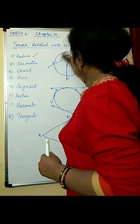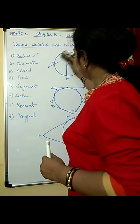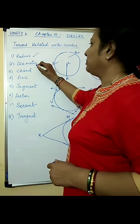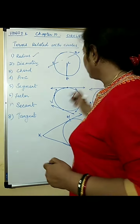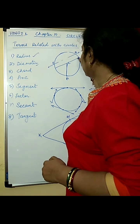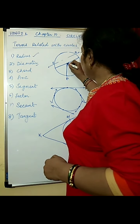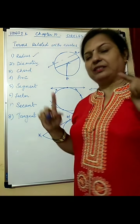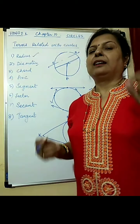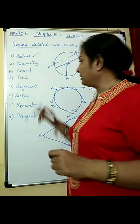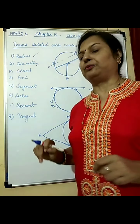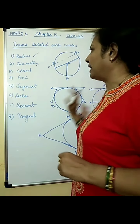The second one is diameter. Diameter is double of radius. It is a line whose endpoints lie on the circle and it passes through the centre. A line that passes through the centre and whose endpoints lie at the circumference is called a diameter.